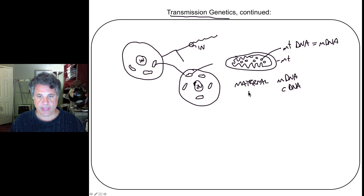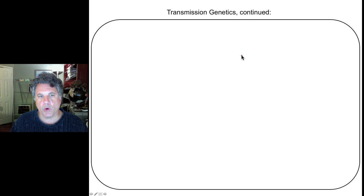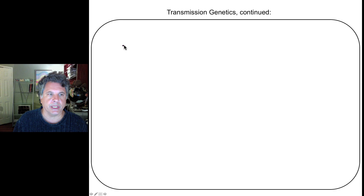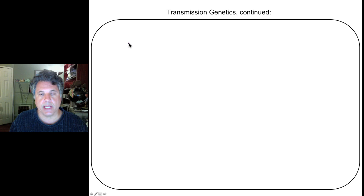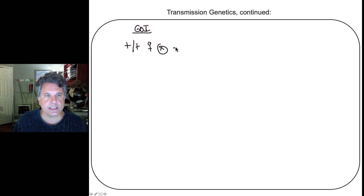Now, what about genomic imprinting and epigenetics? Let's look at a hypothetical cross that illustrates the type of experiment that led to the discovery of genomic imprinting. We're back to nuclear genes now — not mitochondria or chloroplast genes. Imagine a case where a wild type homozygous female with respect to a particular gene of interest (GOI) is crossed to a male that is heterozygous for a particular mutation.